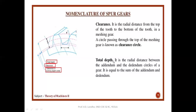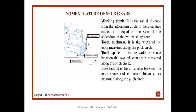Total depth is the radial distance from the top of the teeth to the bottom of the teeth — it is equal to the sum of addendum and dedendum. Working depth is the sum of the addendum of either of the gears, or the radial distance from the top of the teeth to the clearance circle. Clearance is provided so there is no removal of material from the bottom of the teeth.